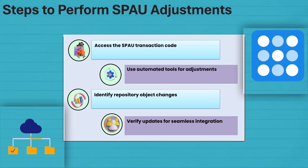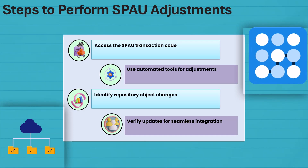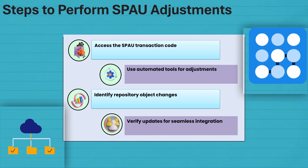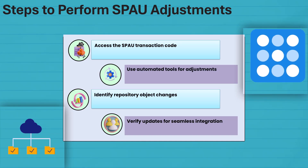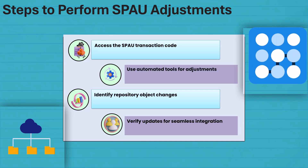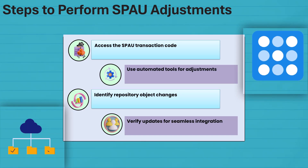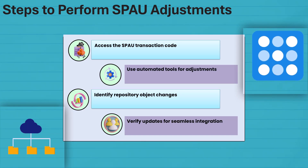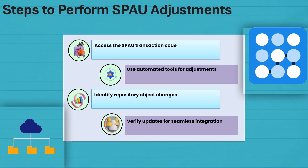SPOW adjustments are all about automation, like upgrading software with a click. Follow the steps carefully and let the tools simplify your work. But remember to verify — trust, but always verify.